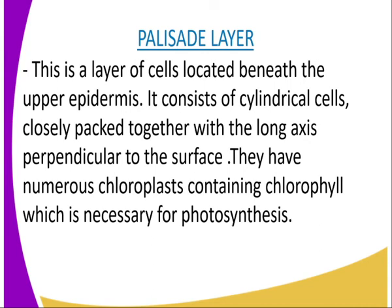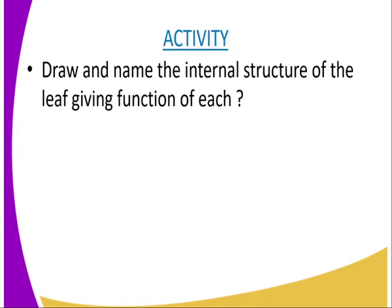The last organelle we are going to look at is the palisade layer. These are layers of cells located beneath the upper epidermis. It consists of cylindrical cells, closely packed together with the long axis perpendicular to the surface. They have numerous chloroplasts containing chlorophyll, which is necessary for photosynthesis. For our activity, we must draw and name the internal structure of the leaf, giving the function of each organelle.